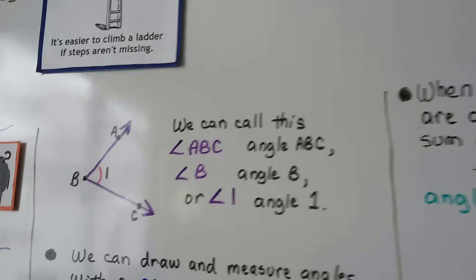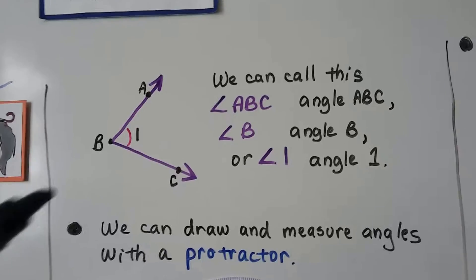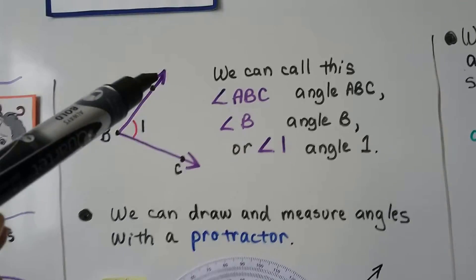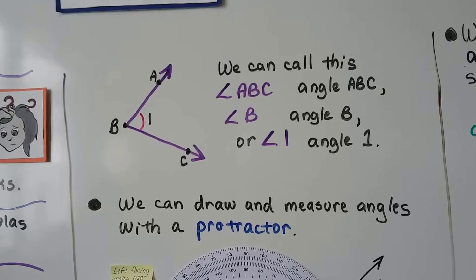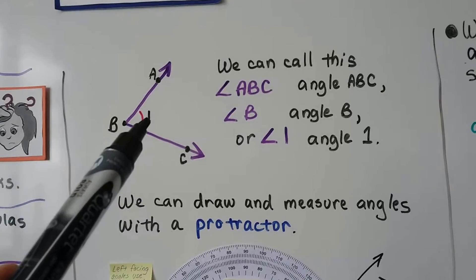So we can call this angle ABC because the B is at the vertex. We can also call it angle B and just call it by its vertex. We can also call it angle one because there's a little one there.